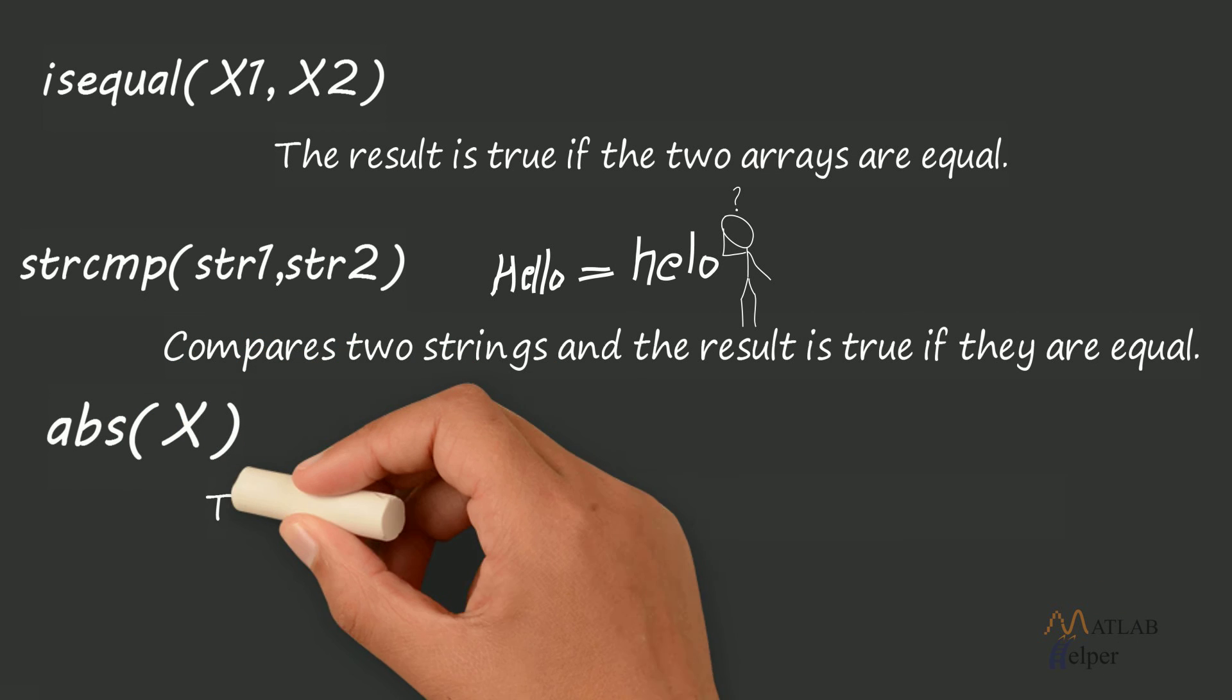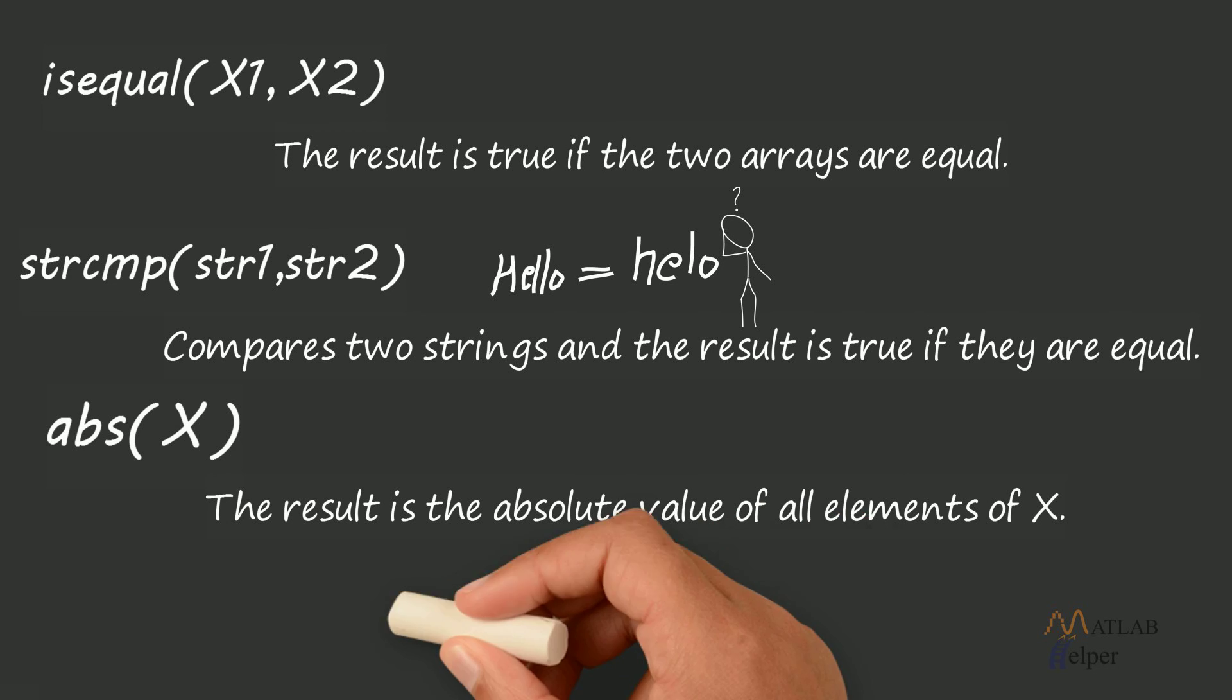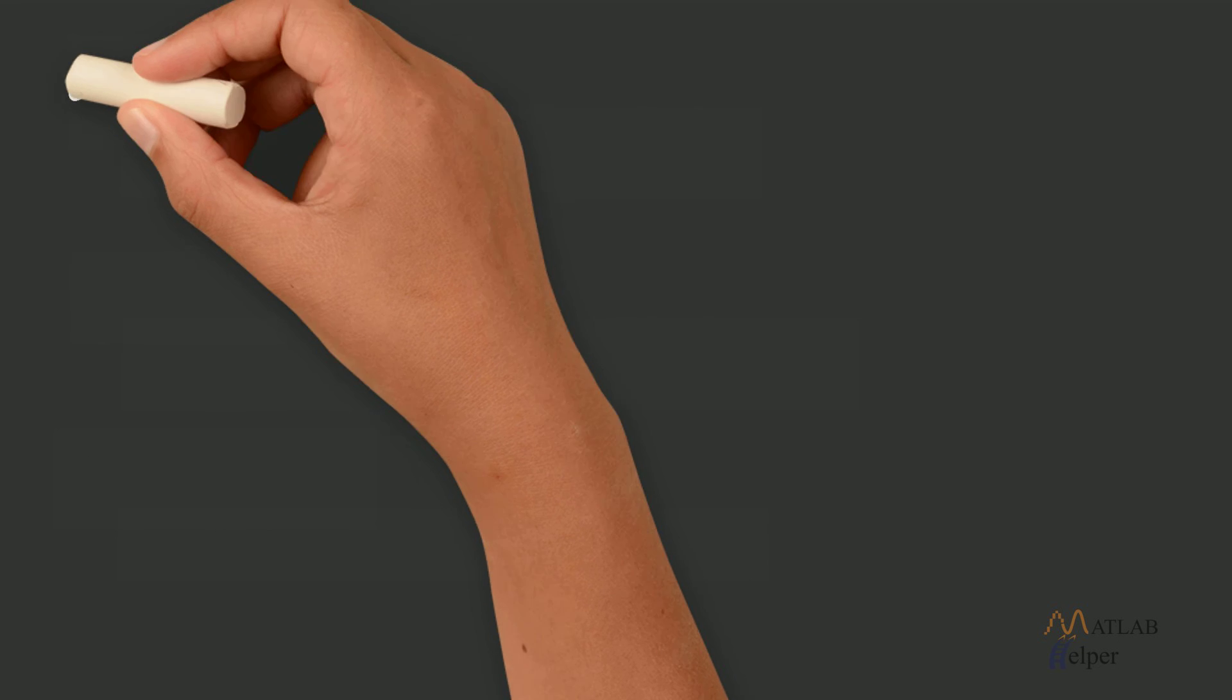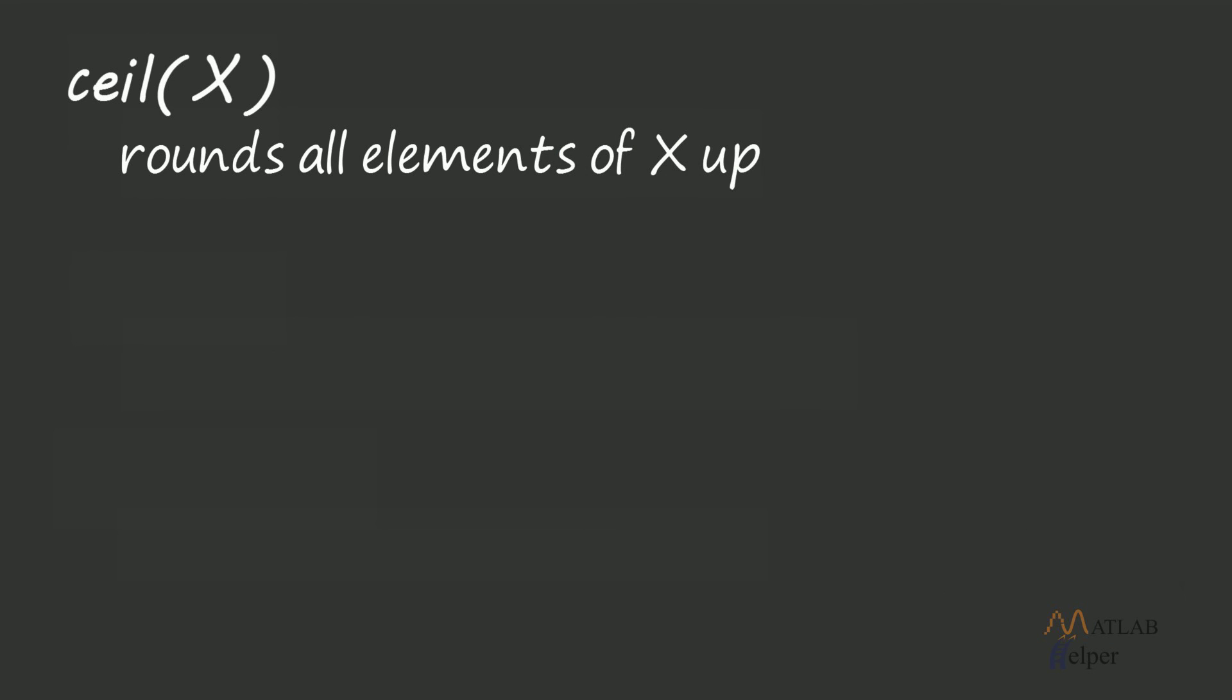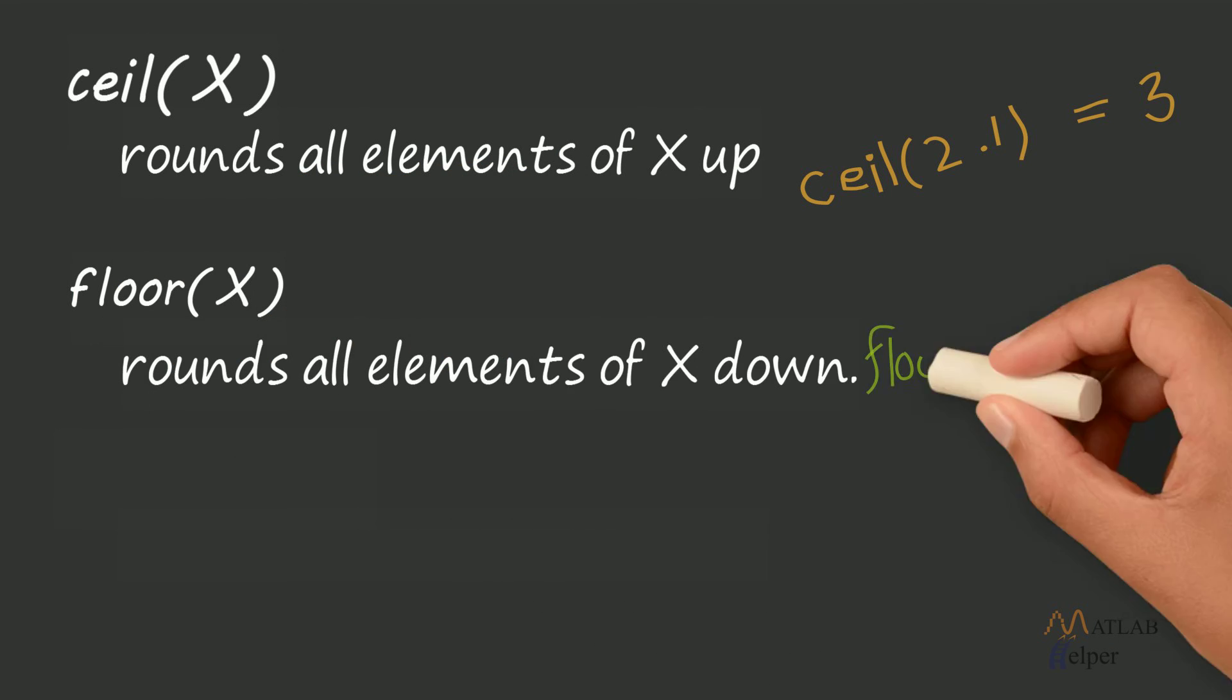abs X: The result is absolute value of all the elements of X. ceil X rounds all elements of X up. floor X rounds all elements of X down.